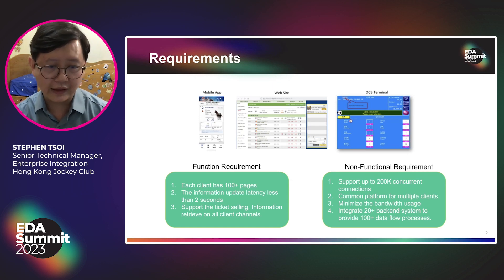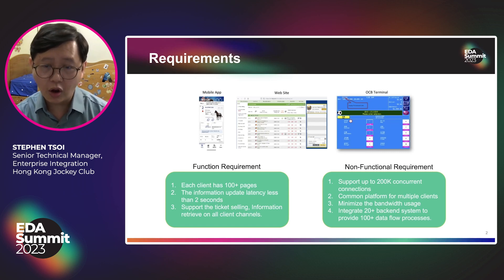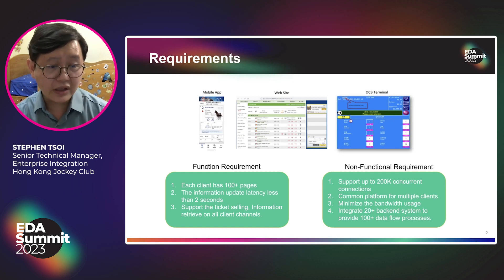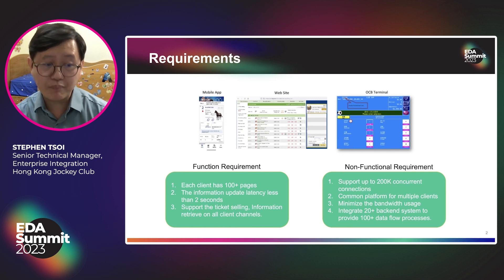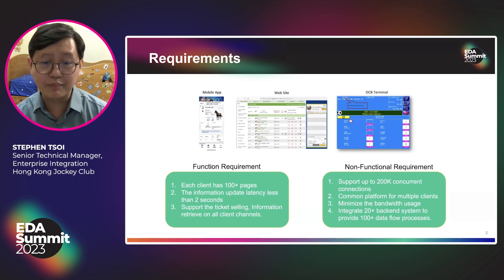First, let us have a look at the user requirements. We need to support at least three different types of products: mobile application, web application, and ATM. Each product will have at least 100 pages. Over 60% of the information will be frequently updated, and the latency must be within two seconds. All products must provide full functionality to the customer. Additionally, as part of the mandatory non-functional requirements, a common framework must be built to support high performance, high throughput, and low latency for multiple channels. The whole infrastructure must support up to 200,000 concurrent connections, and it must be easy to scale.